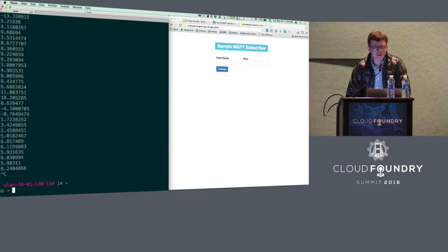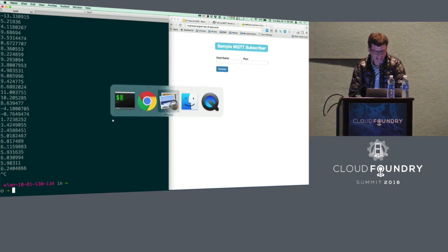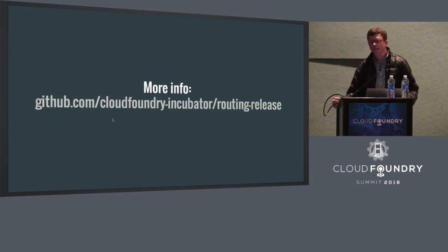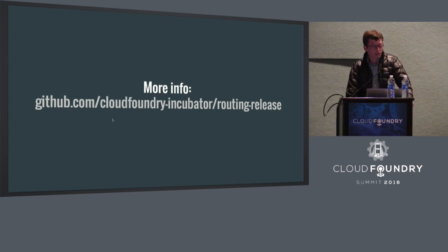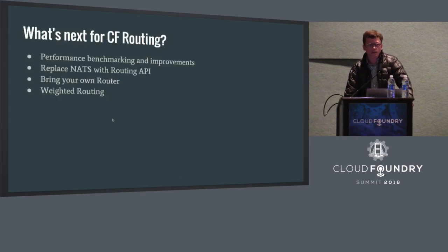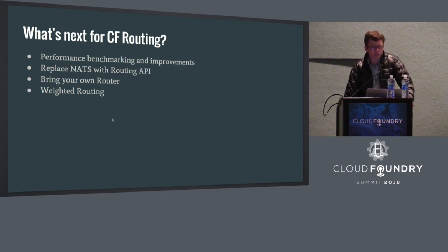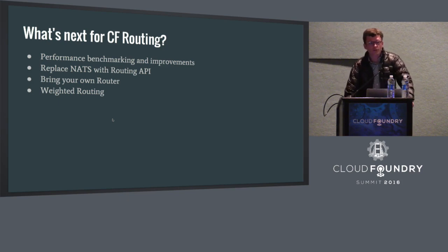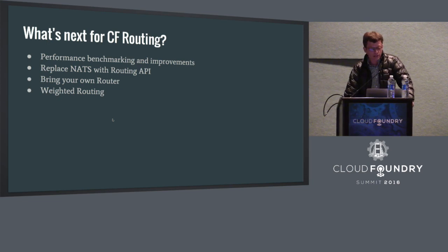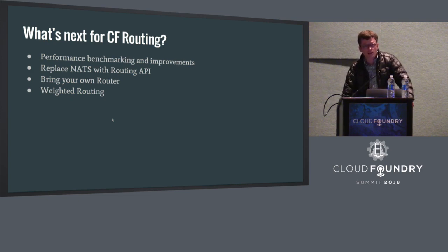That was cool, especially for those of us who spent so much time working on it. For more information about TCP routing and the routing release BOSH release, here's a URL — I'll post it again at the end. The routing team is currently exploring performance improvements to the routing tier, and we have some technical debt: the Cloud Foundry community wants to remove NATS, the message bus. We believe the routing API can replace NATS for route registration.